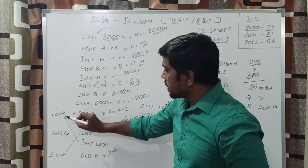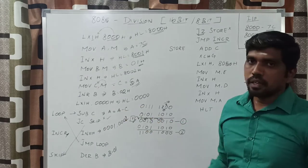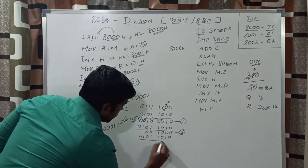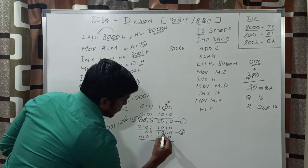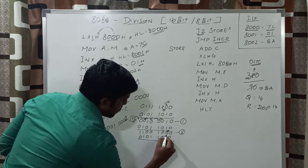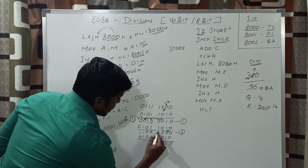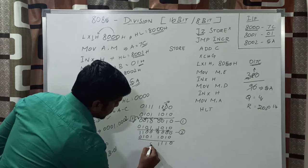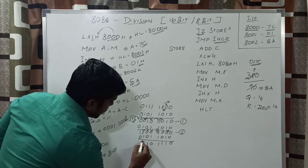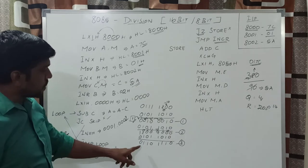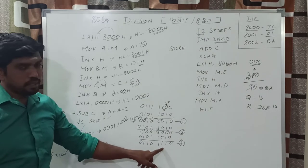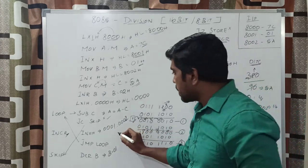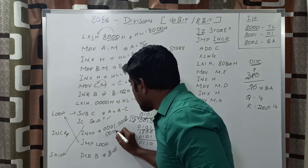The program counter points to the loop instruction: SUB C. Once again, subtract the C value from the accumulator. The A value is C8h. After the third subtraction of C8h minus 5Ah, you get the result 6Eh. You check JC skip — the carry value is 0, so the condition is false. It executes INX H and the HL pair value becomes 0003h. Then JMP loop.